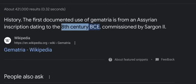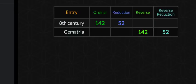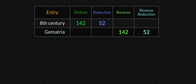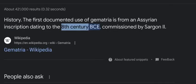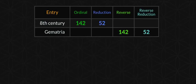Again, 8th century BCE — I'm born in the eighth month. Back on topic: the 142 and 52 — the 8th century syncs up with gematria, people. You see that — absolutely amazing.